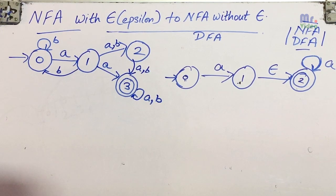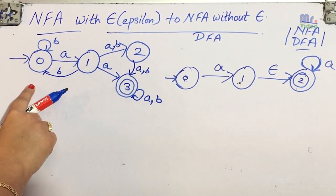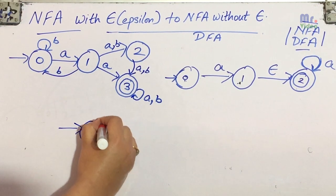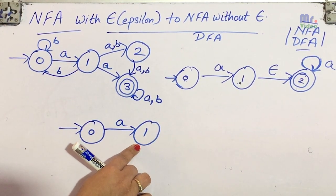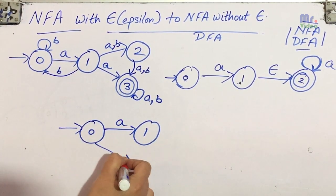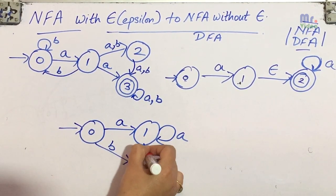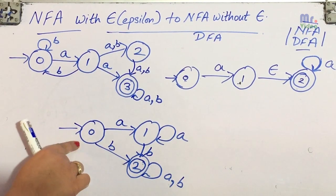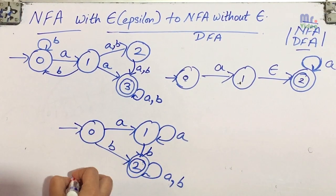To give an overview: a DFA is a transition diagram in which from each and every state and for each and every input we have exactly one next state. For example, if I have initial state 0, from here if I have 'a' as input then I am transitioning only to one next state, that is state 1. Same for 'b' — transitioning to state 2. In this diagram, from every state for every input alphabet there is exactly one next state, so this is an example of a DFA.